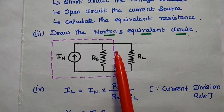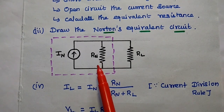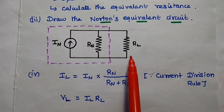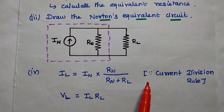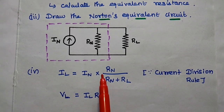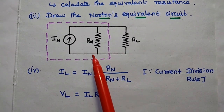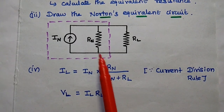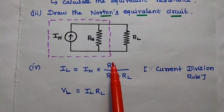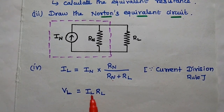After calculating the short circuit current and equivalent resistance, we can draw the Norton's equivalent circuit — a current source in parallel with the equivalent resistance and the load resistor. To find the load current through RL, we use the current division rule: IL equals the total current IN multiplied by the opposite resistance. According to the current division rule, IL = IN × RN divided by the sum of RN and RL. We can also find the voltage drop as VL = IL × RL.